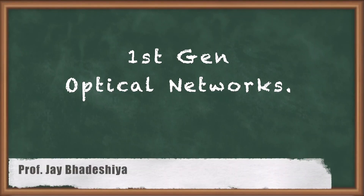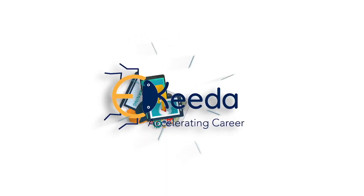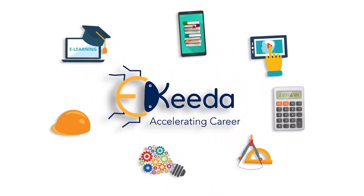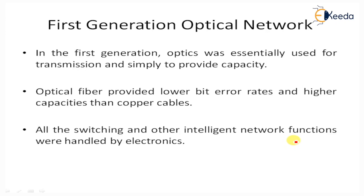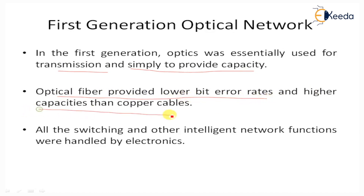Here we are going to learn about first generation optical networks. In the first generation, optics was essentially used for transmission and simply to provide capacity. Optical fiber provided lower bit error rates and higher capacity than copper cables. All the switching and other intelligent network functions were handled by electronics.